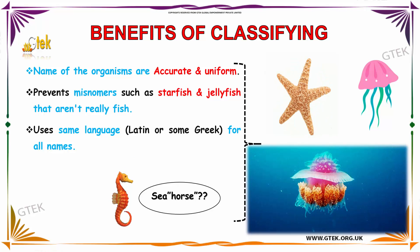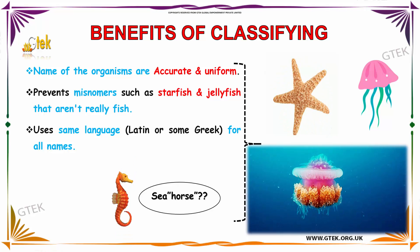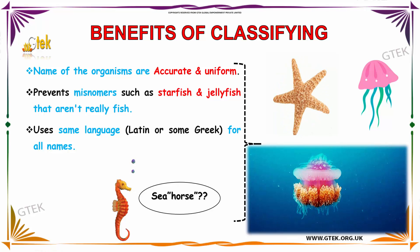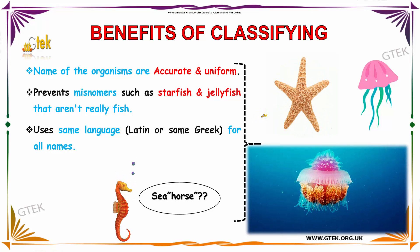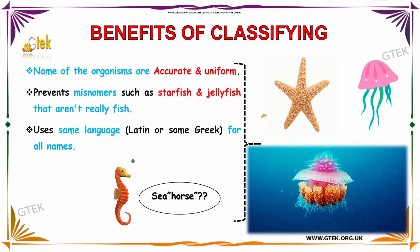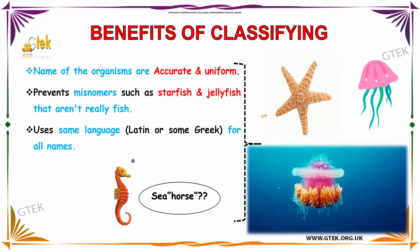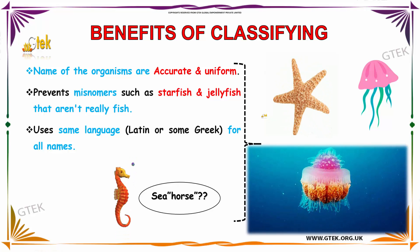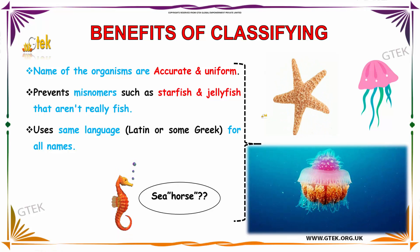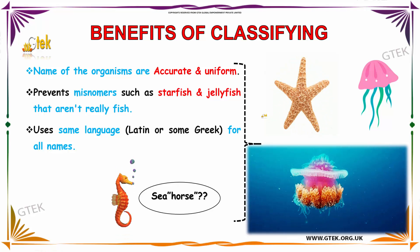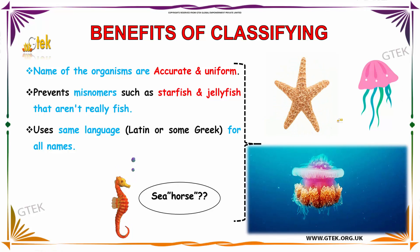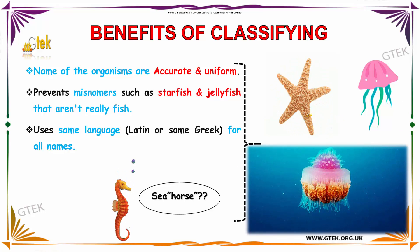Now we are seeing about benefits of classifying. The names of the organisms are accurate and uniform. It prevents misnomers such as starfish and jellyfish because they aren't really fish. The benefits include using the same language for all names. You can see the starfish and jellyfish over here.